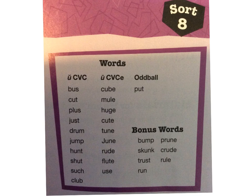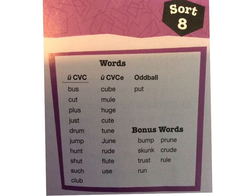Now let's check your word sort patterns for short U and long U. When we look under our short U words, where we have our consonant, vowel, consonant pattern and we're listening for the 'uh' sound, under short U you should have placed the words: bus, cut, plus, just, drum, jump, hunt, shut, such, and club.